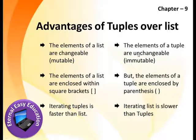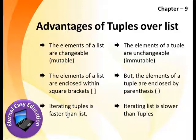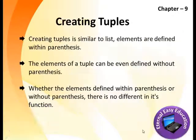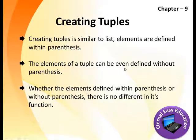Advantages of tuples over lists: elements of a list are changeable, elements of a tuple are unchangeable. Elements of a list are enclosed within square brackets, elements of tuples are enclosed by parentheses. Iterating tuples is faster than lists; iterating a list is slower than tuples. Creating tuples is similar to a list — elements are defined within parentheses.